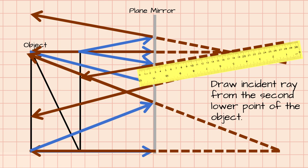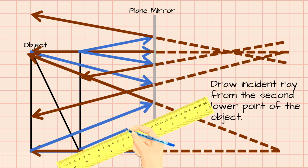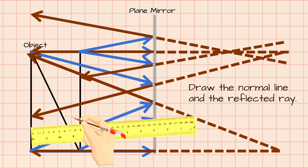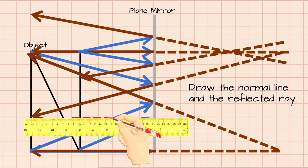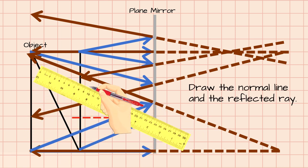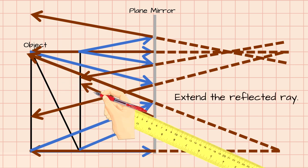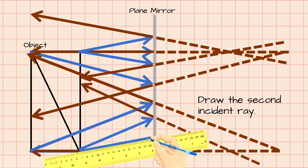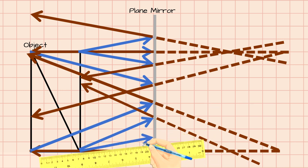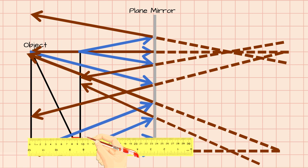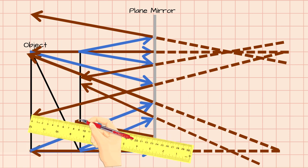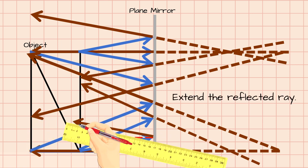Draw an incident ray from the second lower point of the object. Draw the normal line and the reflected ray. Extend the reflected ray. Draw the second incident ray. Draw the normal line and the reflected ray. Extend the reflected ray.